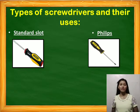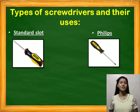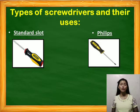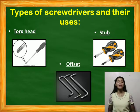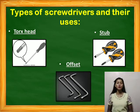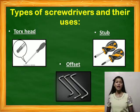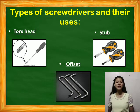Types of screwdrivers and their uses: standard slot is used for turning slotted head bolts or screws. Phillips is a tool used for turning Phillips head bolts or screws. Torx head is used for turning with a Torx bolt or screw. Stub is used for tightening or loosening in places where a longer blade will not fit, specifically for narrow places. Offset is used for tightening or loosening in extremely close places.